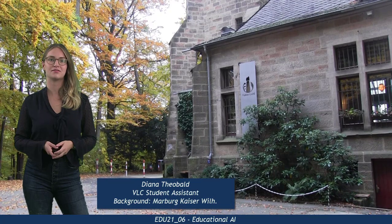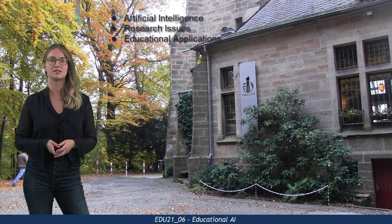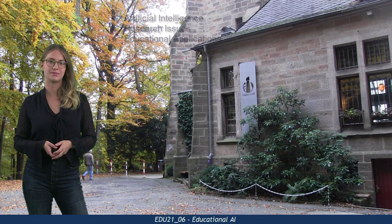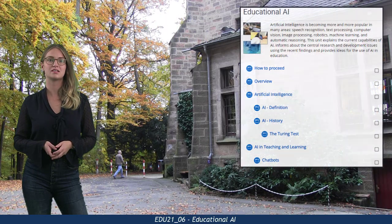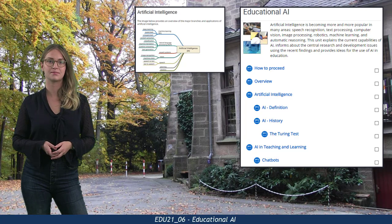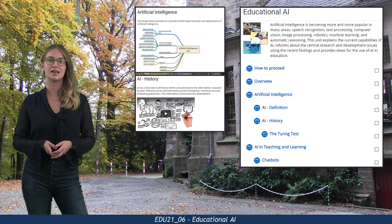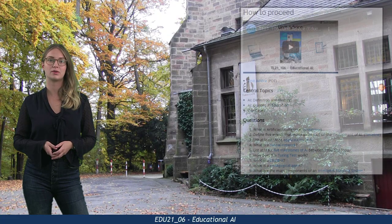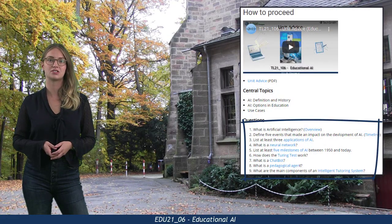This unit explains the current capabilities of artificial intelligence in general, informs about the central research and development issues using the most recent findings, and provides ideas for the use of AI in education. Use the content activities to find all necessary details about artificial intelligence, its historical development, and its use in teaching and learning scenarios. And if you don't know where to go next, use the question set in the How to Proceed section for guidance.